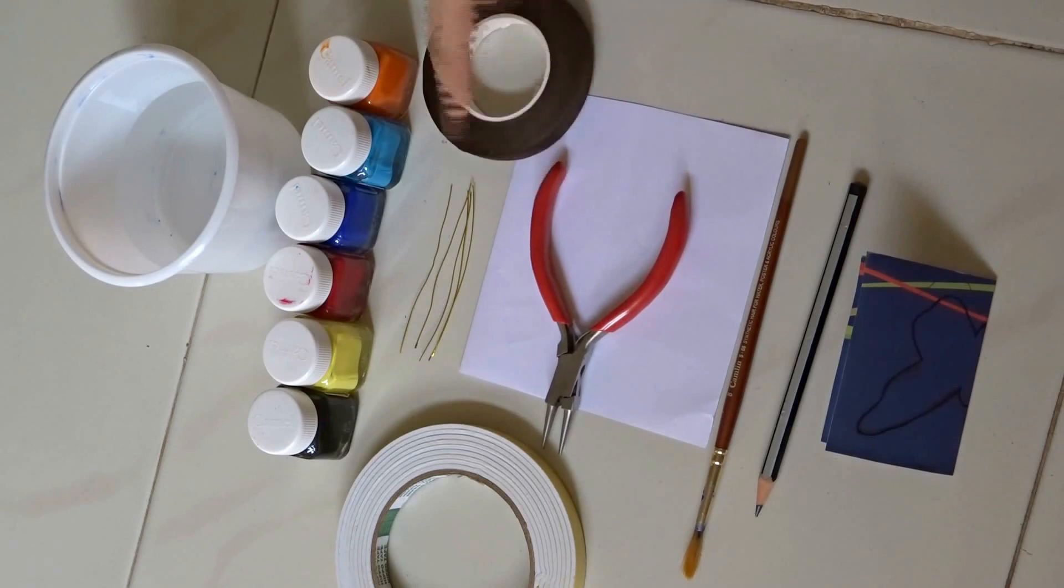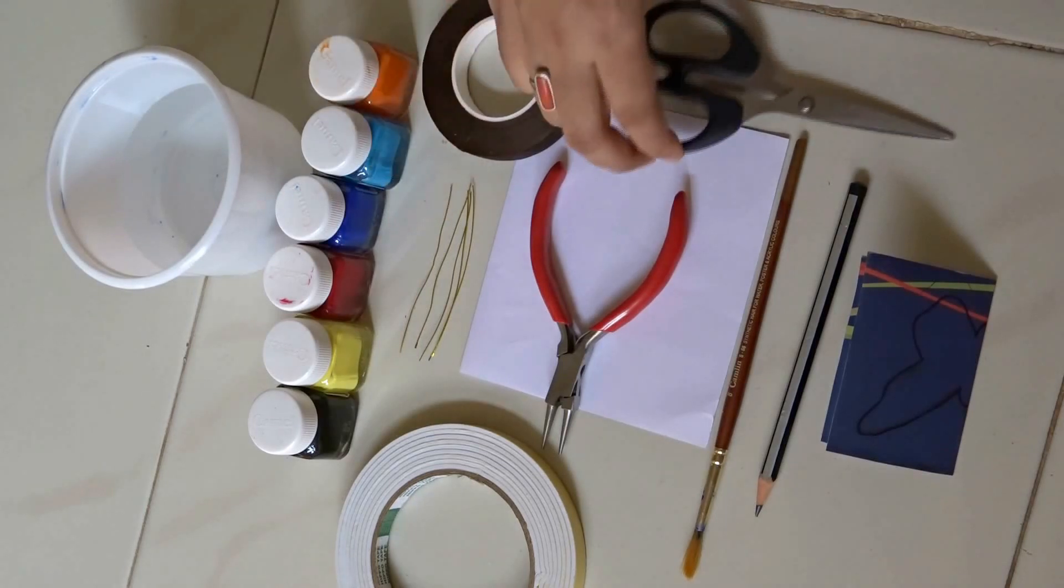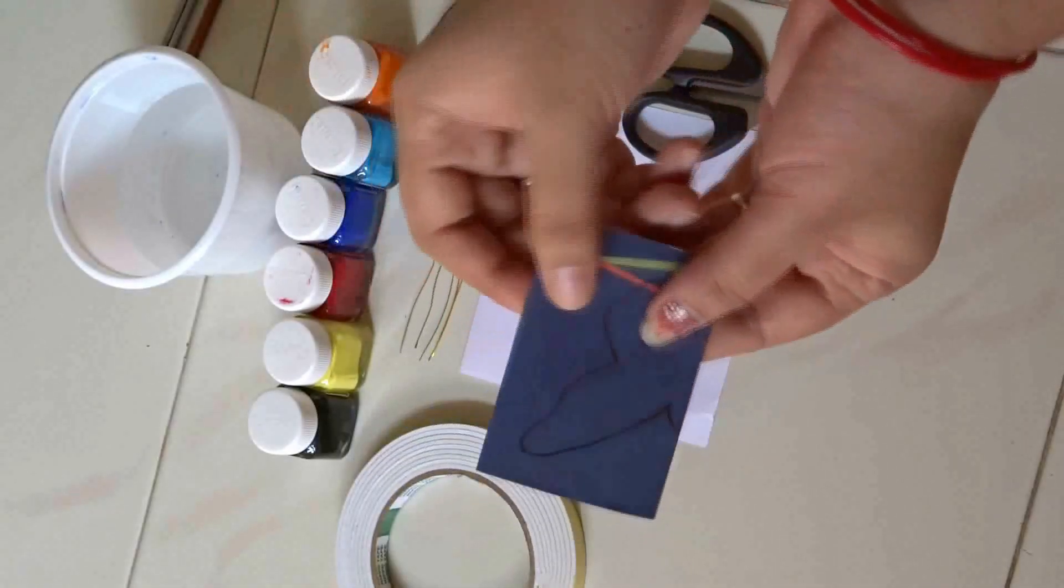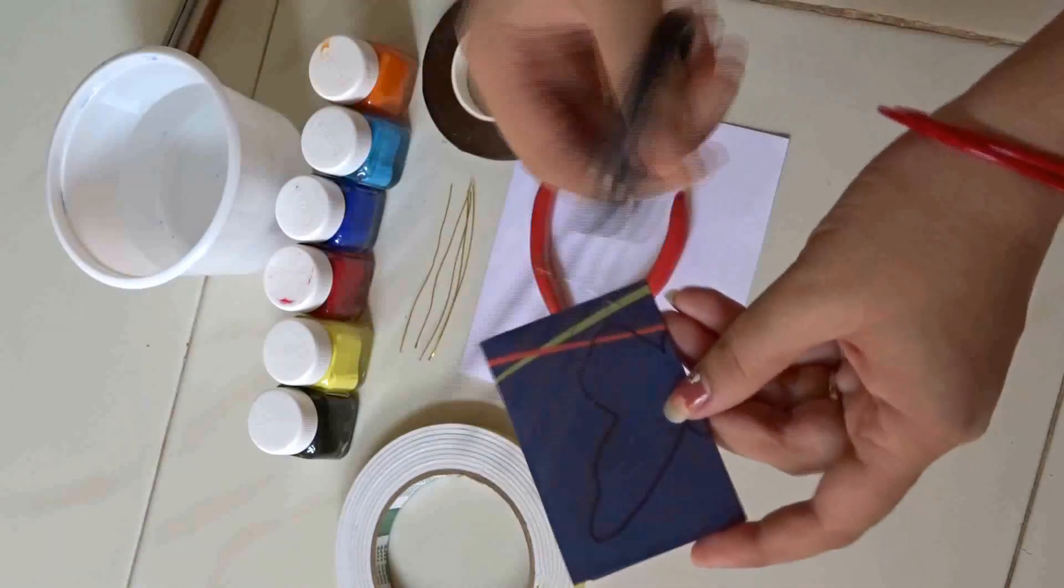a round nose plier, floral tape, some colors, water, double-sided tape, some wires, and of course scissors. First, take the cardstock, fold it in half, and draw a half butterfly like this. Then cut this out.